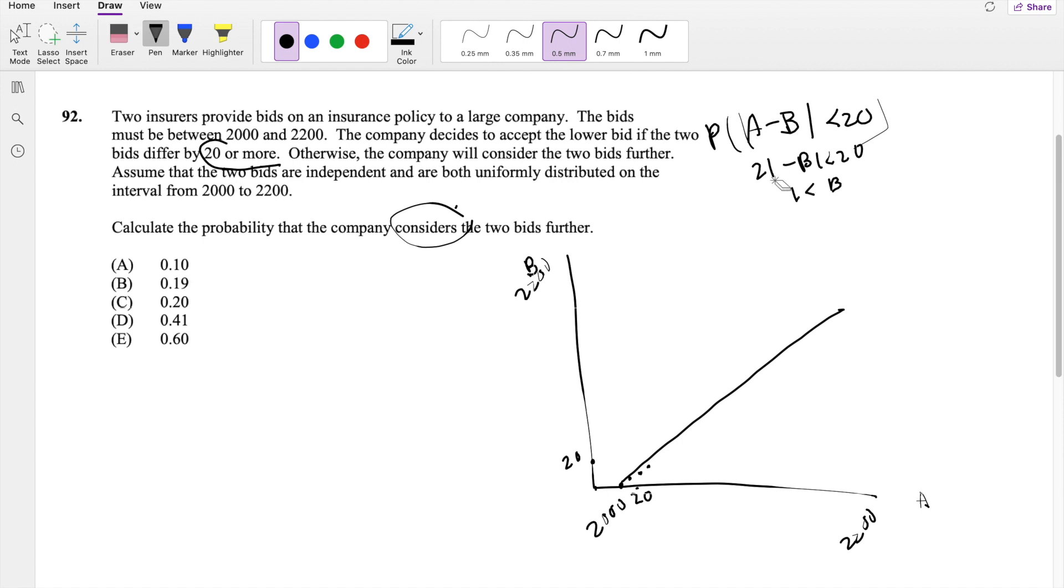If company B bids, let's say, 21, then company A can at most bid 1. So it's going to be like here, it's going to be 1. If it's 22, it's going to be like 2. 23 is going to be like that. So it's actually going to form two parallel lines going this way.